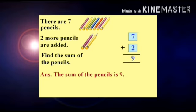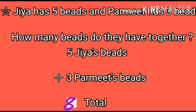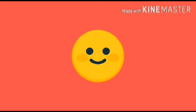Now another question: Jiya has 5 beads and Parmit has 3 beads. How many beads do they have together? First take the number 5 which Jiya has, then add 3 for Parmit's beads: 5 plus 3. You will get the total — altogether 8 beads. I hope you all understood addition and word problems. Stay safe and stay healthy.